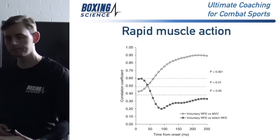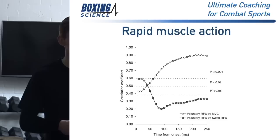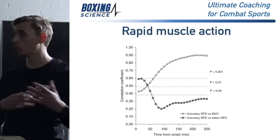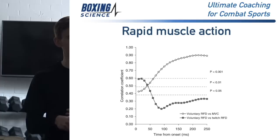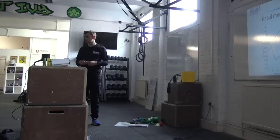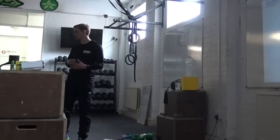This axis here shows something called a correlation coefficient, which tells us how closely one thing is explained by another. The higher this figure, the more confident we can be that one thing explains another. In this respect, it relates to how well maximum strength relates to how quickly you can develop force. Just have in mind the fact that some people still think being strong and lifting weights makes you slow.